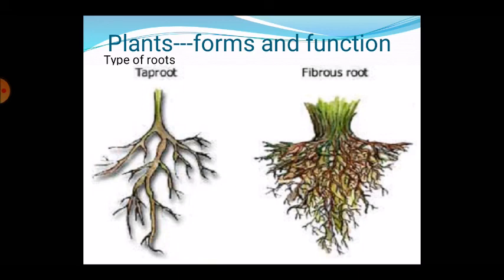Small roots called lateral roots grow out of the main root. The main tap root is thicker than the lateral roots. Examples of plants that have tap roots are carrot, radish, pulses, rose, mustard, etc. Next is fibrous root.